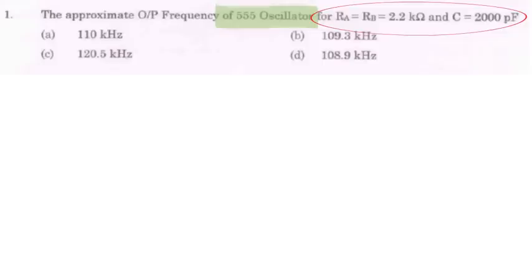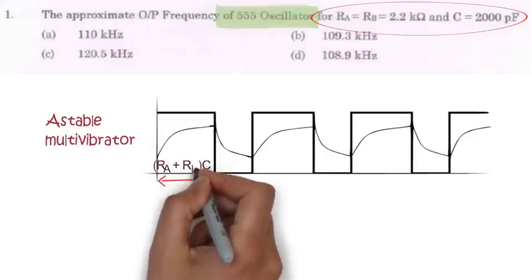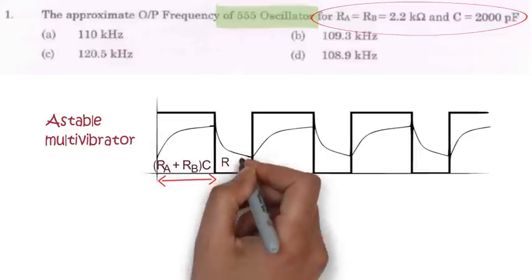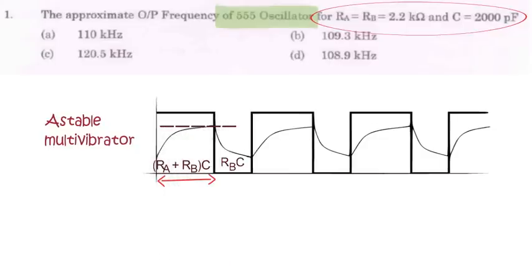Frequency of 555 oscillator can be calculated only when it operates as a stable multivibrator. In that case, capacitor charges in a duration Ra plus Rb into C and gets discharged in Rb C second. But here, capacitors do not charge completely because comparator output change when capacitor voltage reaches 2Vcc by 3. So here the duration will be shorter than Ra plus Rb into C and it gets multiplied by ln2 that is 0.693.